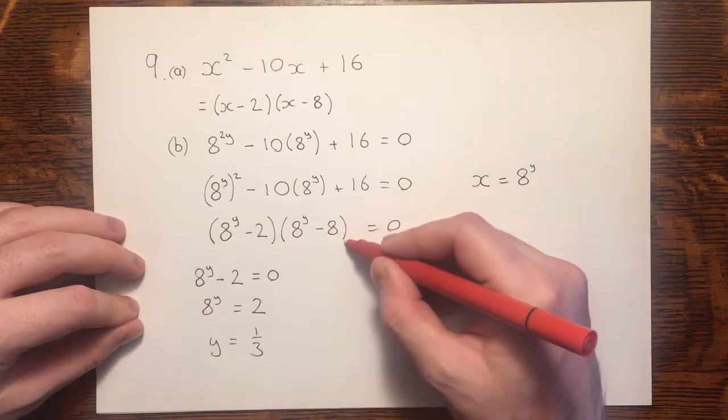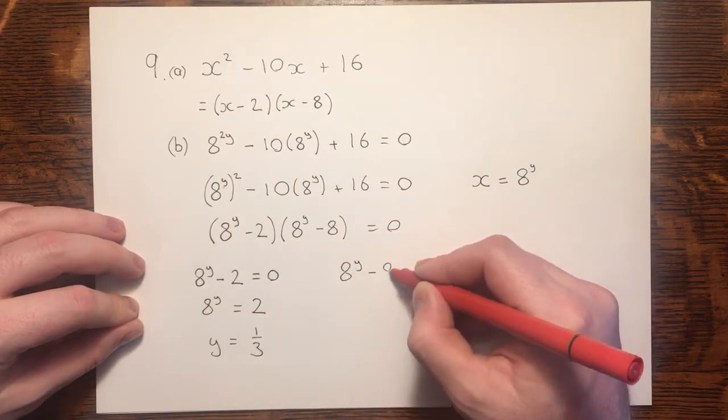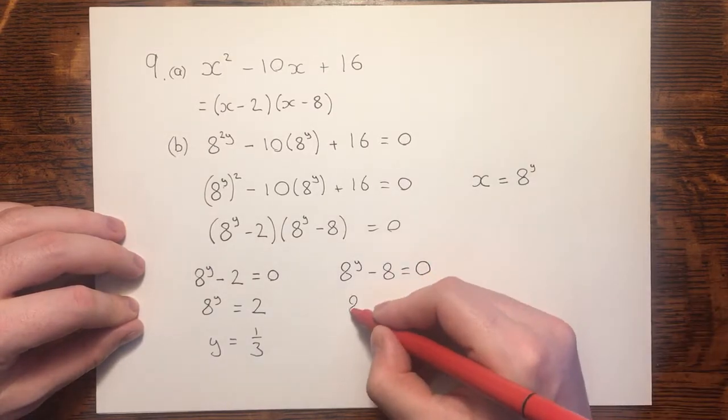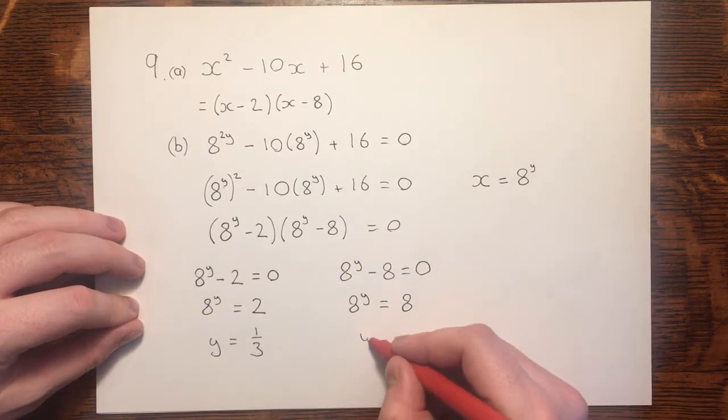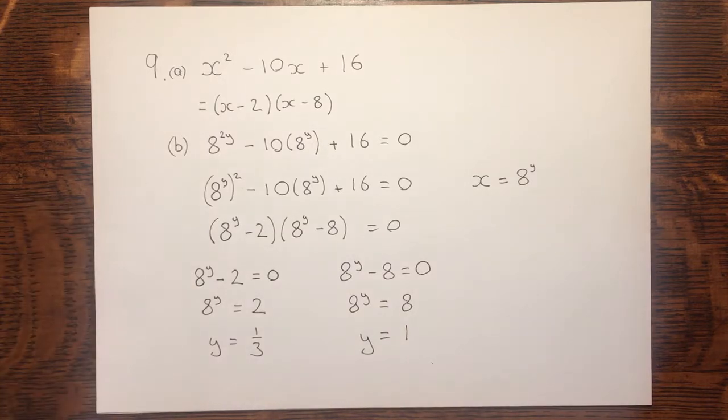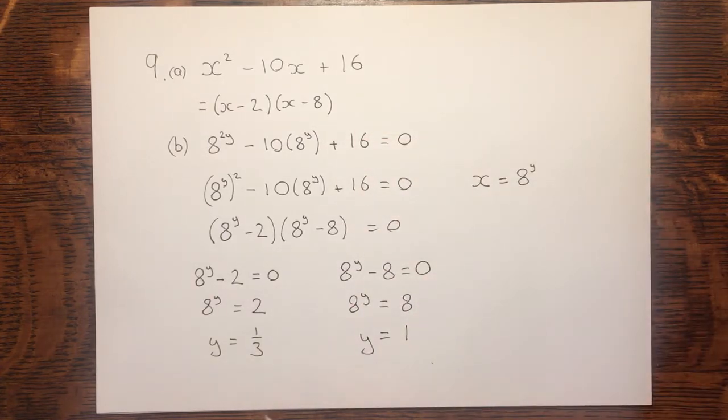Taking the second bracket, rearranging, it's clear that y must be 1. And there we have solved the equation using the factorization from part A, and given our solutions for the value of y in this equation.